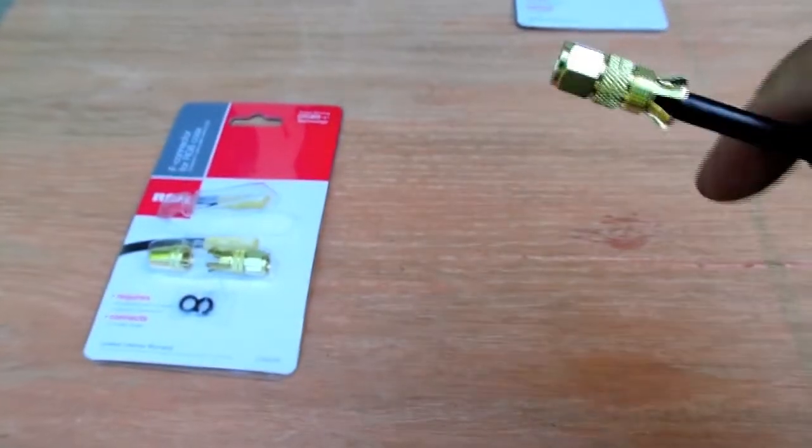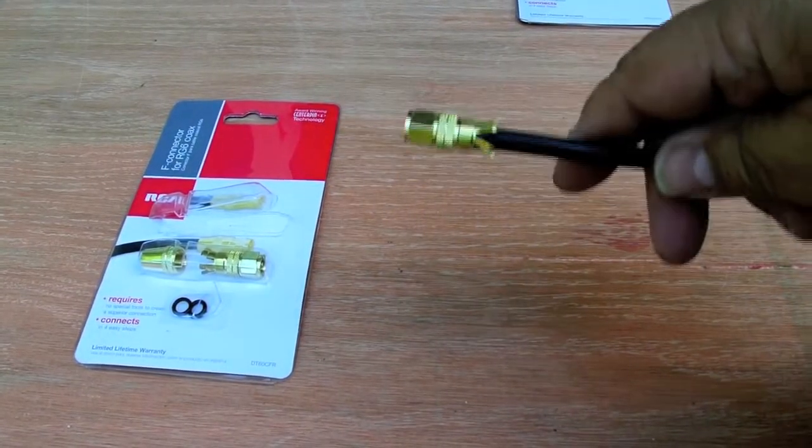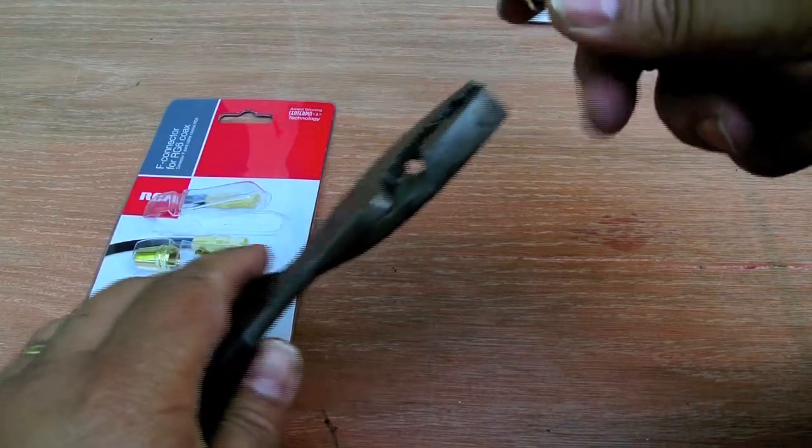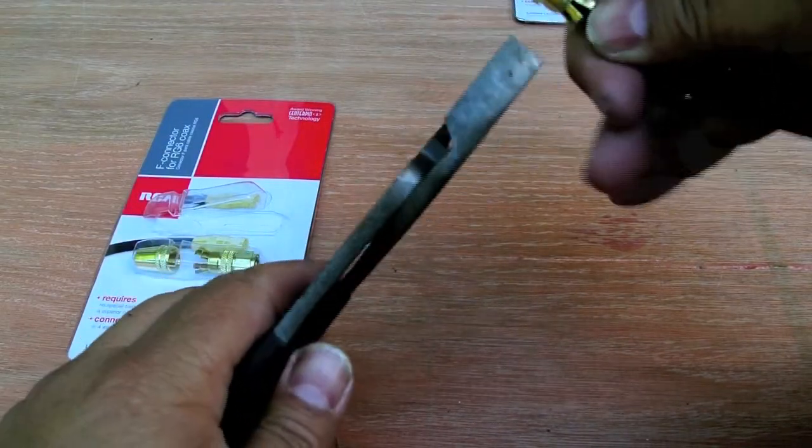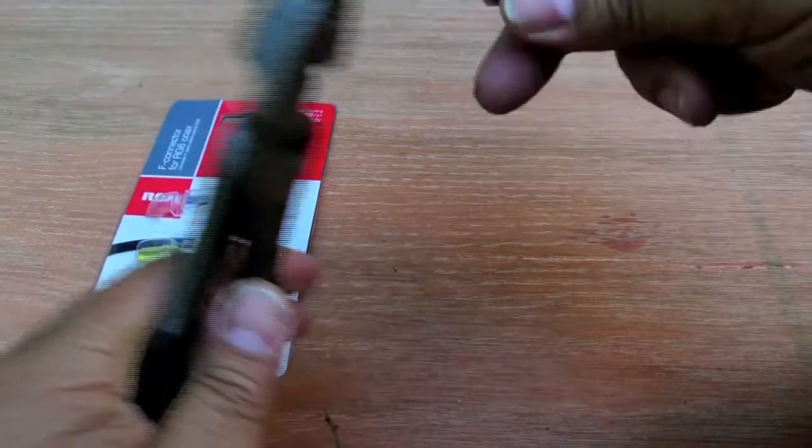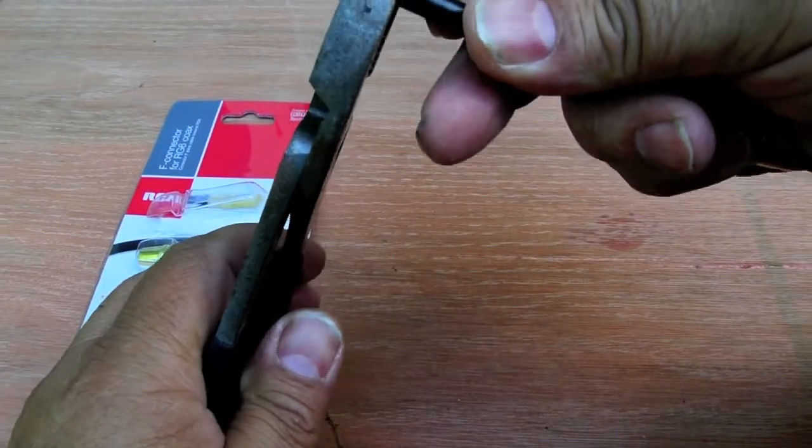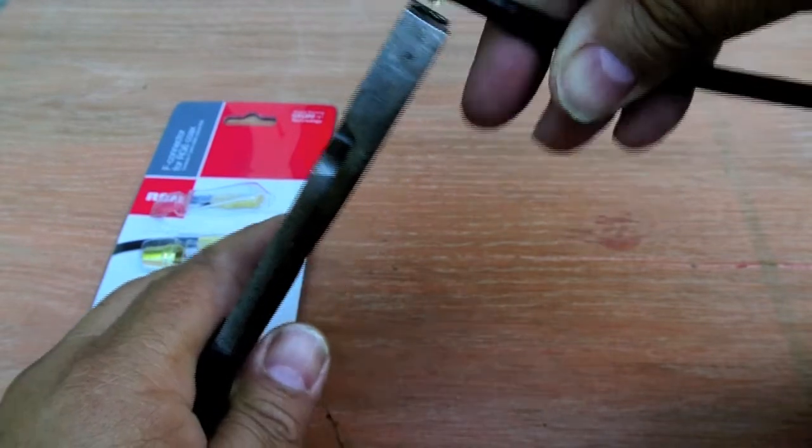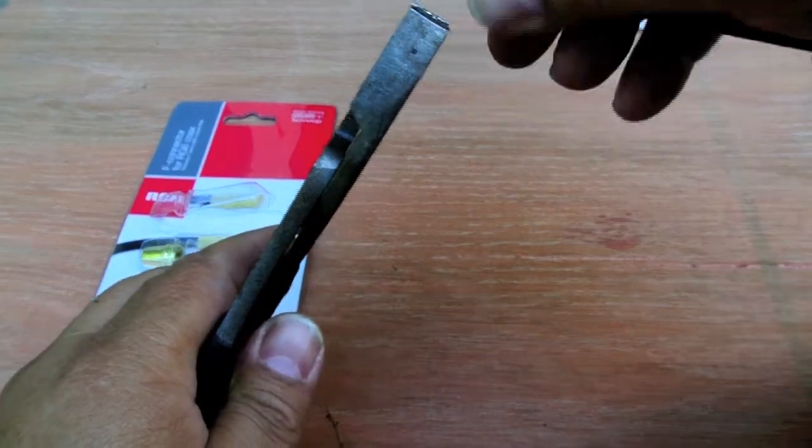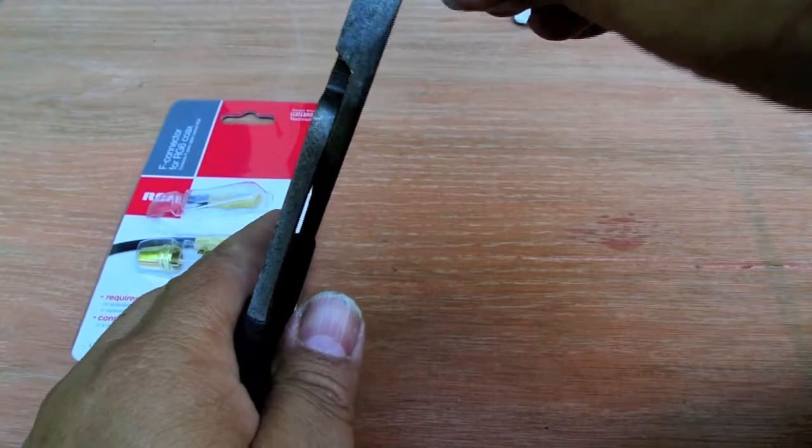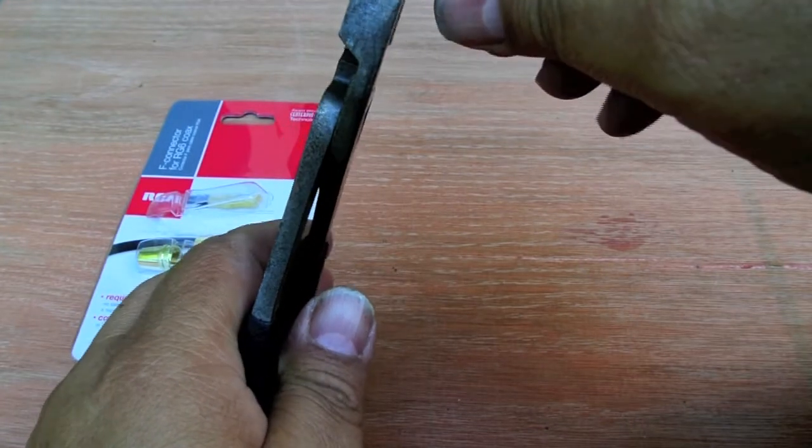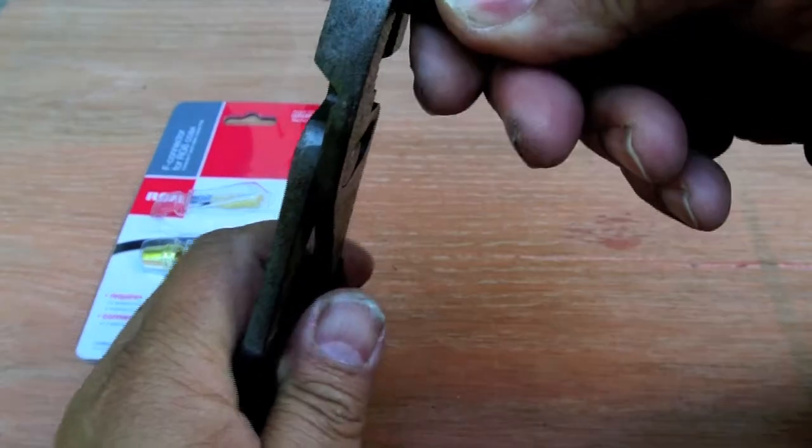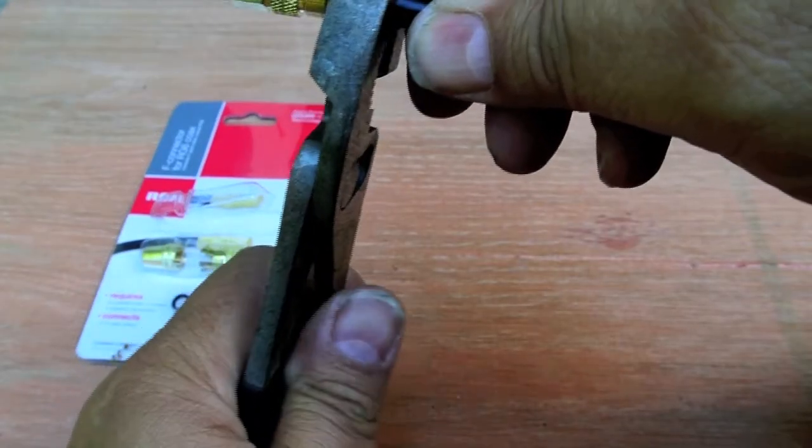Basically all you need to do is take a pair of pliers and crimp the opposing tines. There are six of them. You just crimp the opposing tines two at a time like this and you go around.